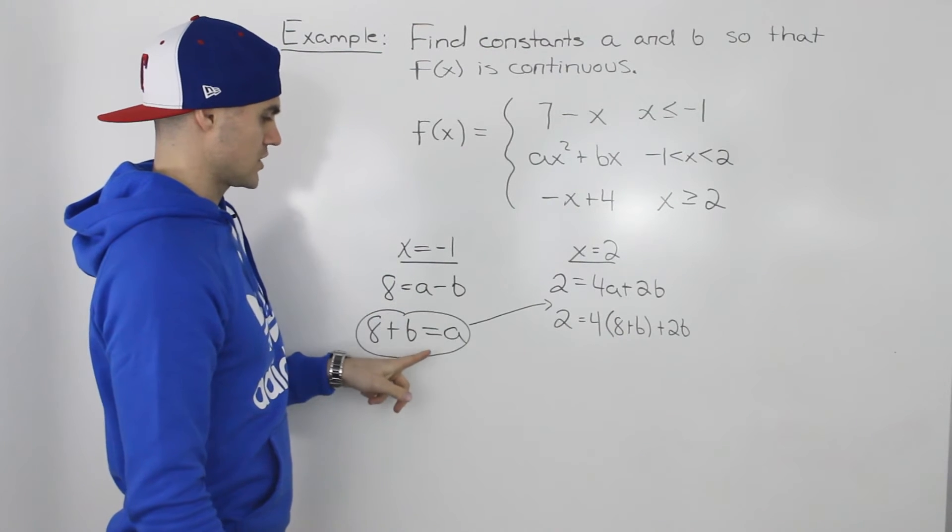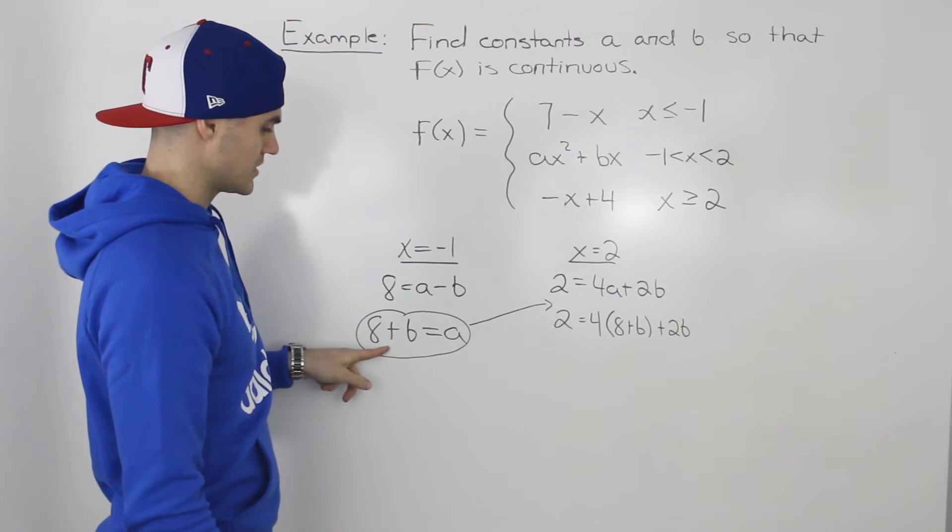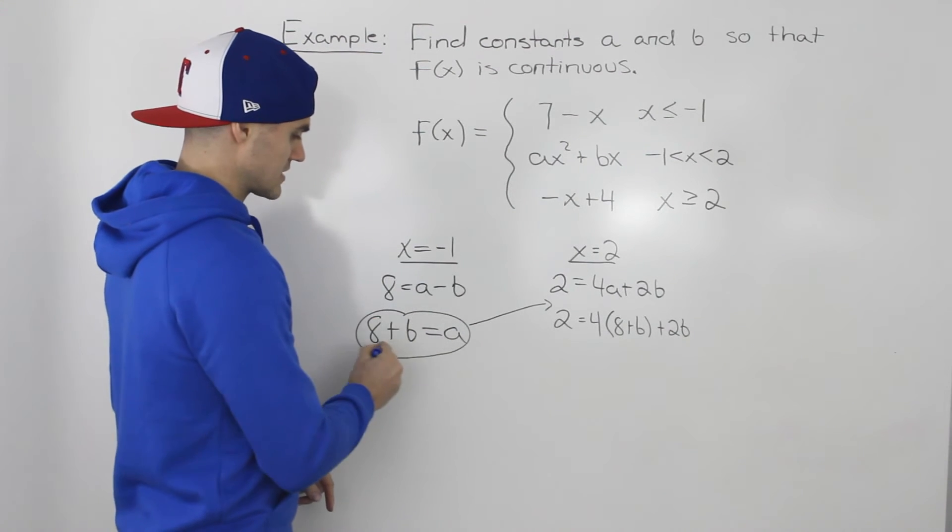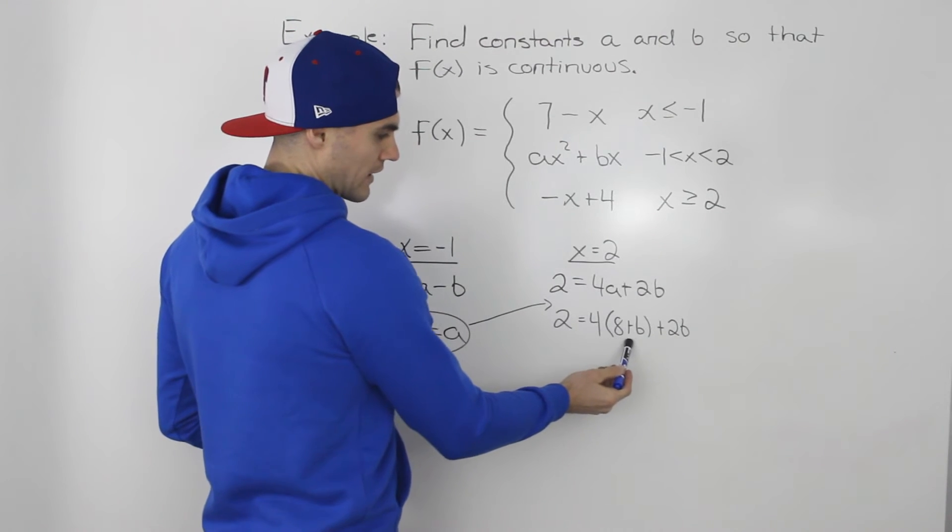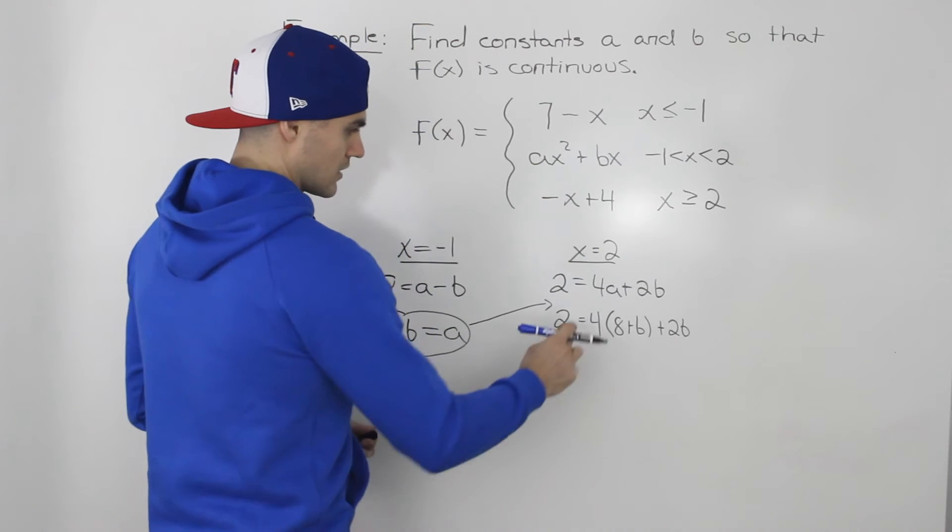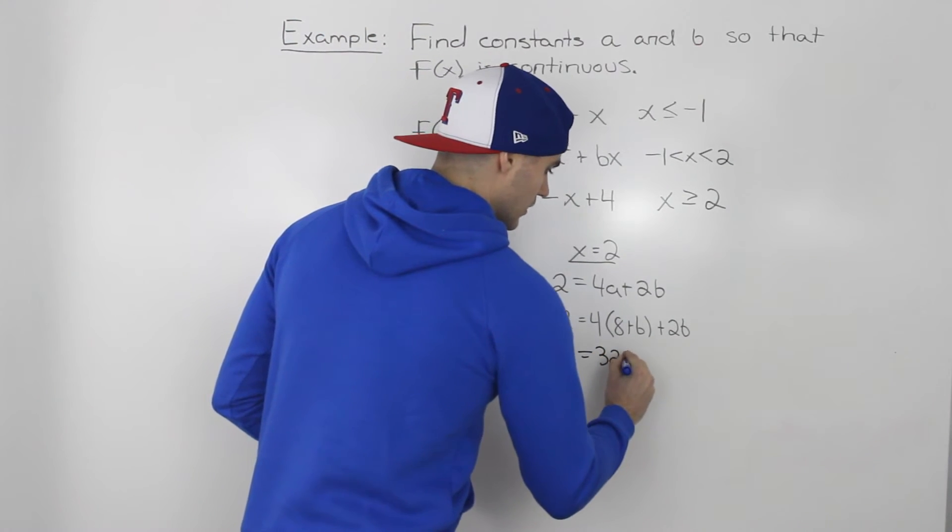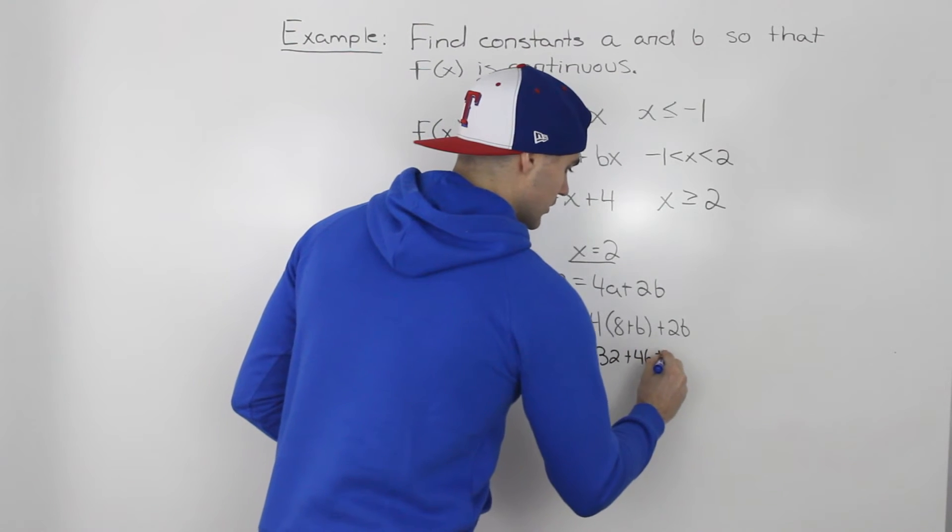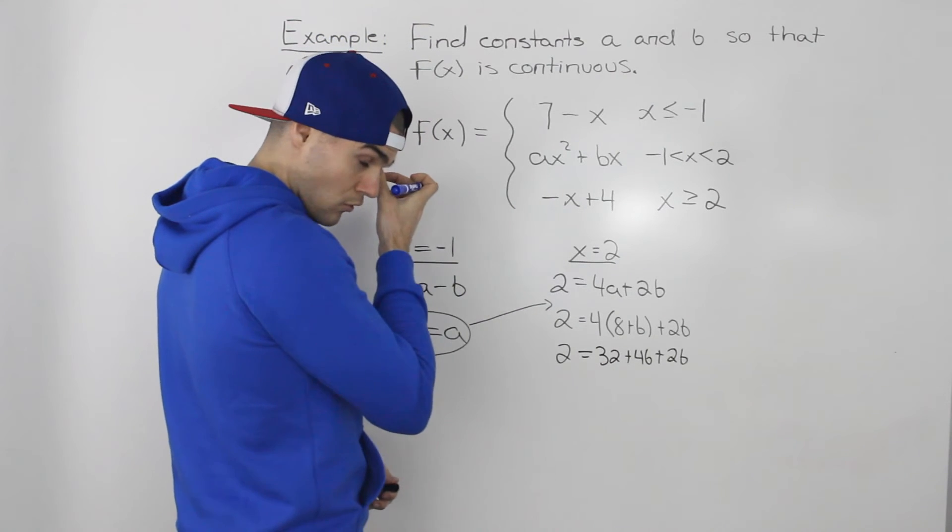Taking this equation and isolating for a, we would bring the negative b over. So we got 8 plus b equals a. And then subbing this expression for a here, we'd have 2 equals 4 bracket 8 plus b plus 2b. So then we distribute that 4 in the bracket, we would have 32 plus 4b plus 2b. And that still equals 2.